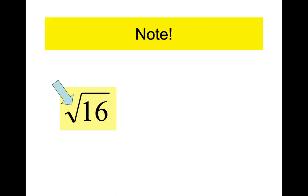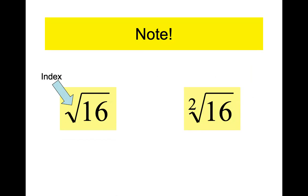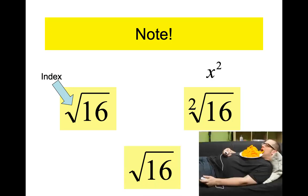The square root of 16 — we know it's a square root because the index, where that arrow is pointing, is 2. We're very lazy and tend not to write in that 2. But on some calculators you'll see that 2 written right there. If there is no number for the index, we assume it is a 2.